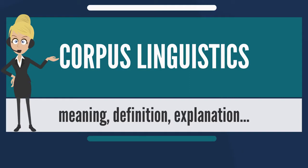Shortly thereafter, Boston publisher Houghton Mifflin approached Kučera to supply a million-word, three-line citation base for its new American Heritage Dictionary — the first dictionary to be compiled using corpus linguistics. It took the innovative step of combining prescriptive elements (how language should be used) with descriptive information (how it actually is used).